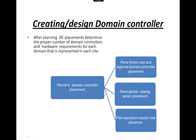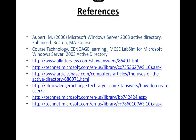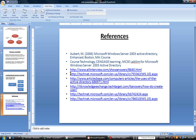Here are the ways to place domain controller placements: first, plan the forest root and original domain controller placements, then plan the global catalogue server placements, and plan the operational master role placements. After planning, determine the proper number of domain controllers and the hardware requirements for each domain represented in each site. Here are the references for this project. Thank you for listening, have a good day.